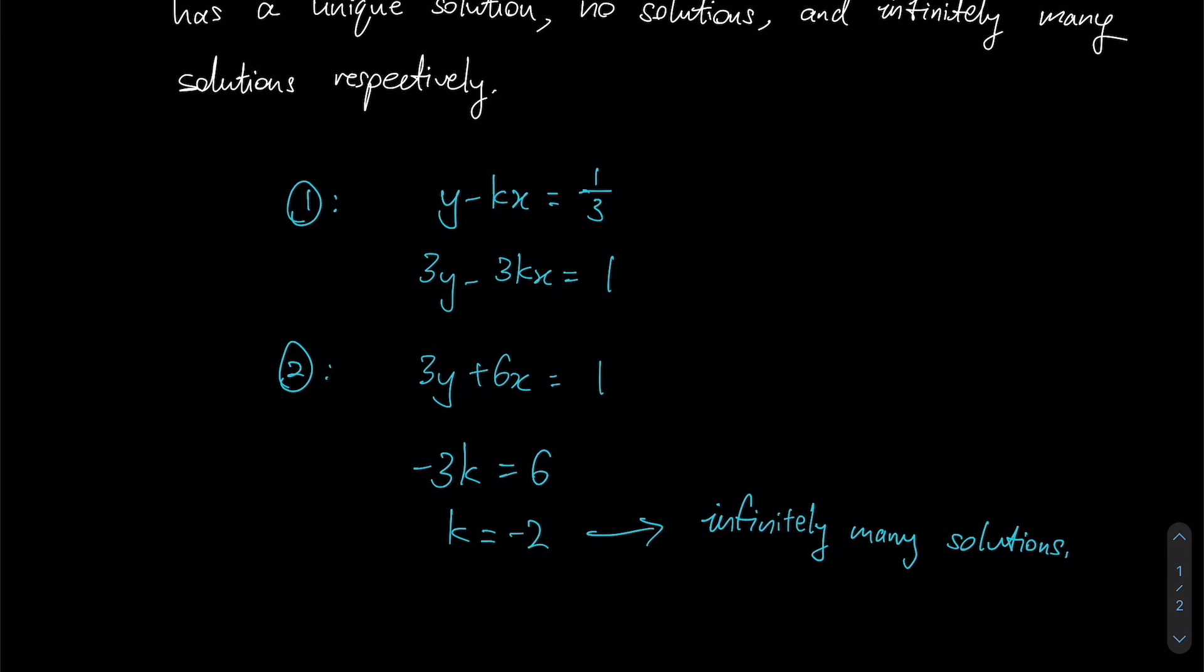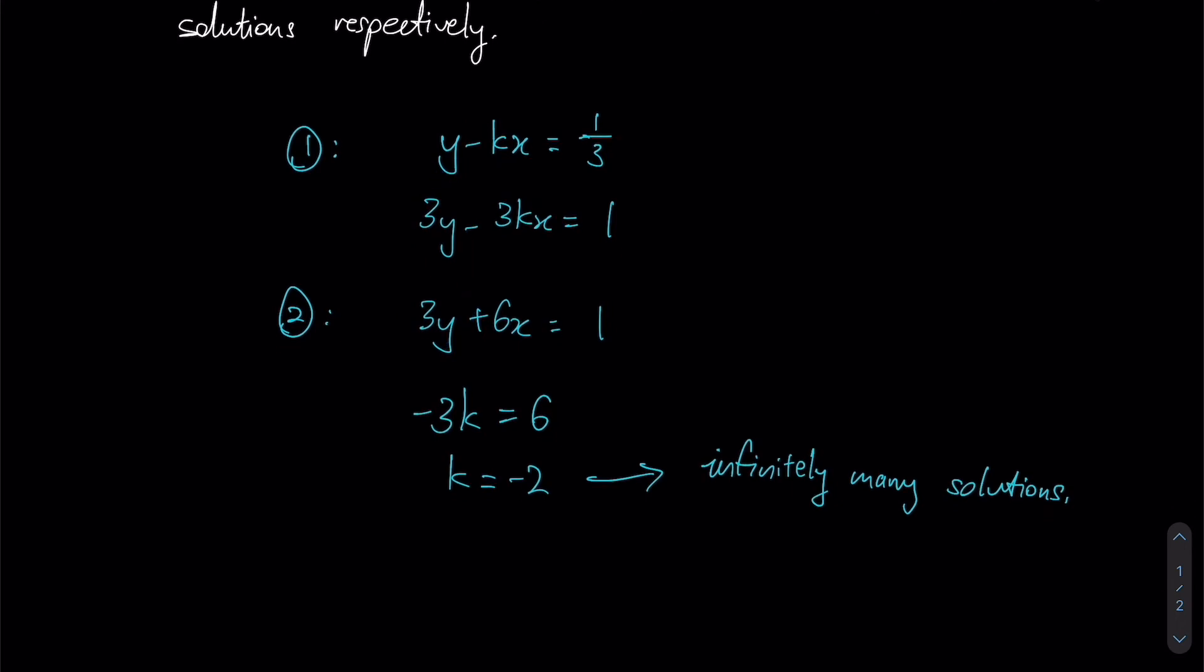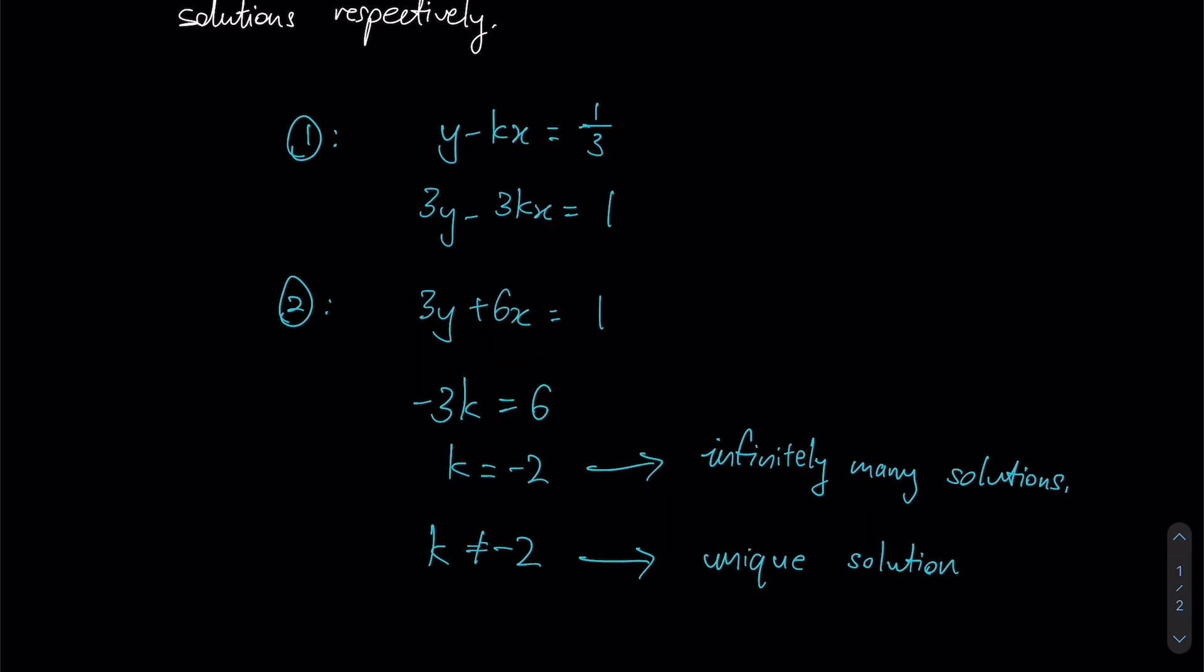That begs the question: what happens when k is not equals to -2? Notice that when k is not equals to -2, this ratio is 1 is to 1, this ratio is 1 is to 1, but finally this ratio here wouldn't be 1 is to 1 anymore. So as long as k doesn't take a value of -2, then we could say that there would be a unique solution.